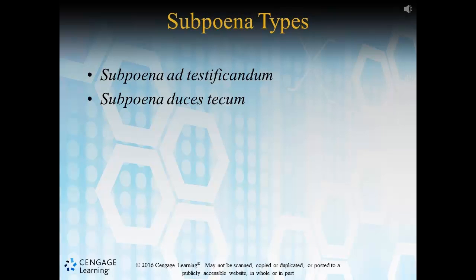There are a few subpoena types to consider. The first requires a person to appear directly in court to testify; failure to appear could result in fines or imprisonment in extreme circumstances. The second type is a written command via the court clerk ordering someone to appear with documents — we see this commonly in healthcare in lawsuits related to malpractice.